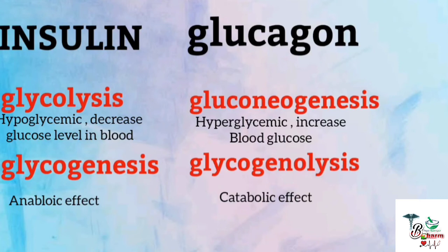Insulin is a hypoglycemic hormone, meaning it decreases the blood glucose level. It promotes glucose uptake by cells. Glucagon is a hyperglycemic hormone, meaning it increases the blood sugar level.